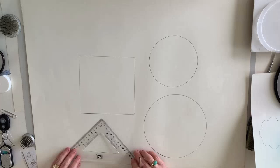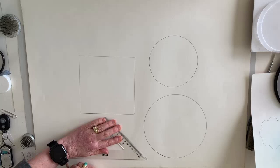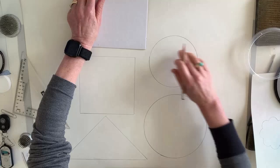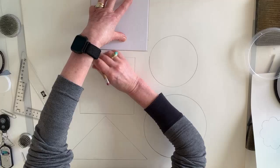Now you may not have a right angle like this at home, but if you have a square or a piece of cardboard, all you have to do is take a ruler.